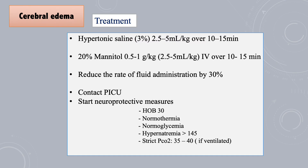The treatment of cerebral edema includes giving hypertonic saline 3% at 0.5 to 2.5 ml per kg over 10 to 15 minutes. You may also give 20% mannitol 0.5 to 1 g per kg over 10 to 15 minutes. In this case, you have to reduce the rate of fluid administration by 30%. If the patient is not on PICU, you have to consult PICU to start neuroprotective measures, which include elevation of the head of the bed to around 30 degrees, targeting normothermia, normoglycemia, and hypernatremia of at least 145 and above. If the patient is ventilated, target a strict CO2 of 35 to 40.